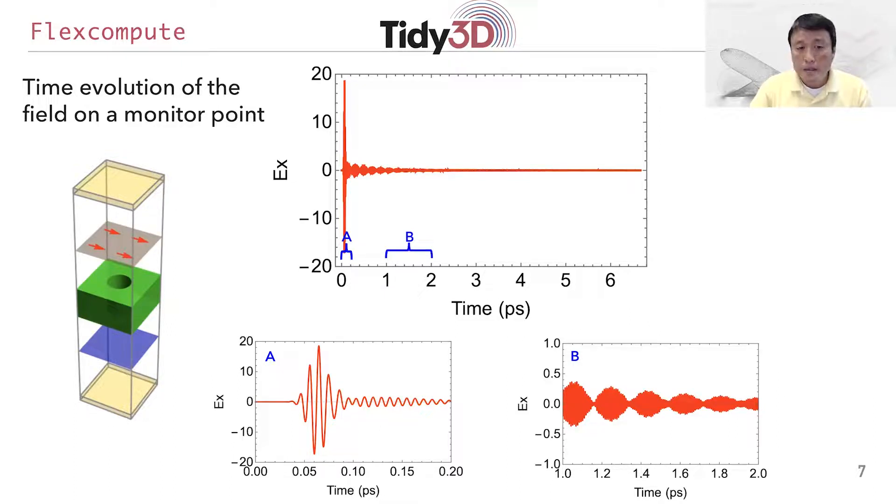What you can see here in this time trajectory is that you have an initial pulse passing through the structure, indicated, for example, by the time duration A here. Below in A, we show Ex as a function of time for that period. You can see the initial pulse with a long tail that's generated afterwards. You can see that this long tail extends very far, all the way to a few picoseconds.